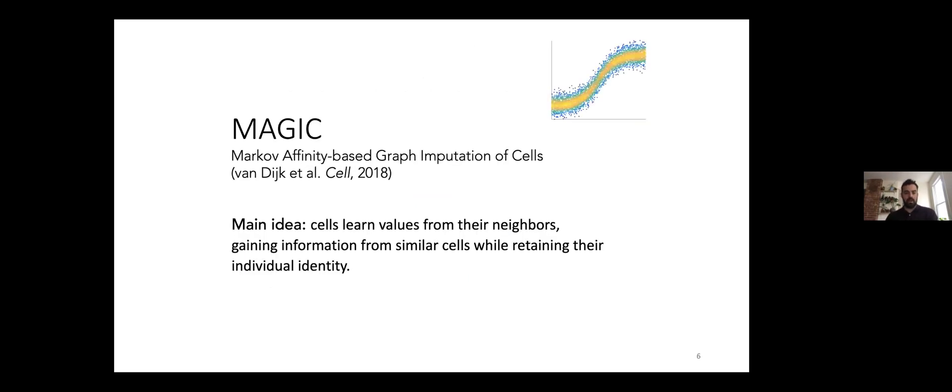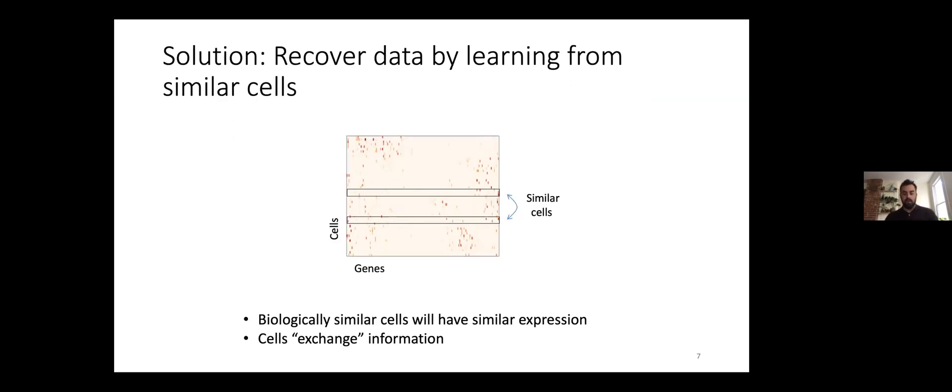To solve this problem we developed an algorithm called MAGIC where the idea is to learn from, for a cell, learn from its neighbors, exchange information and in the process fill in the missing values. We set out with this very simple idea: if we can find two cells that are biologically similar, ideally identical, they will be missing different values because the noise, the underlying noise process is random. As such they can exchange information and fill in the missing values.